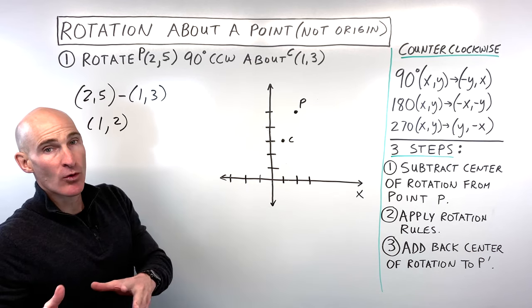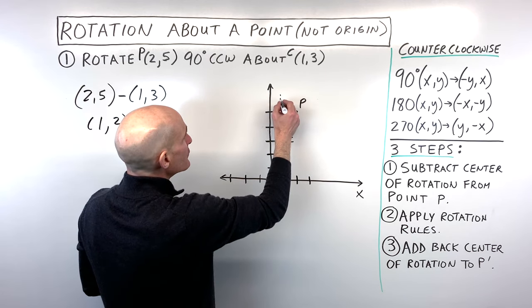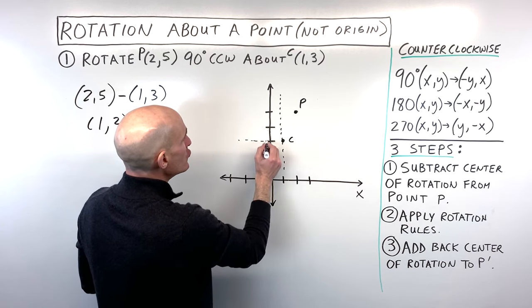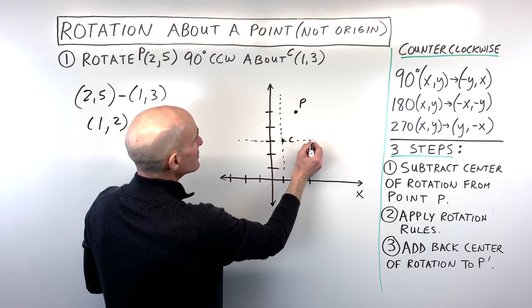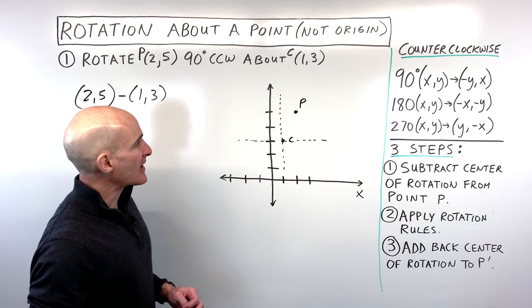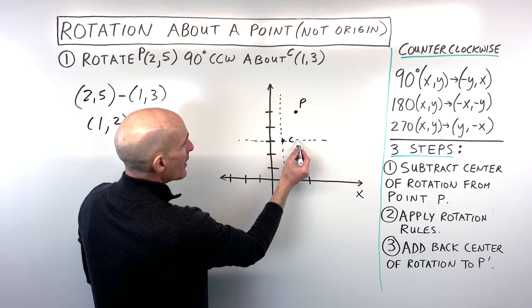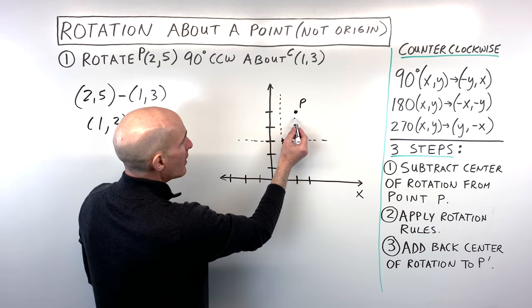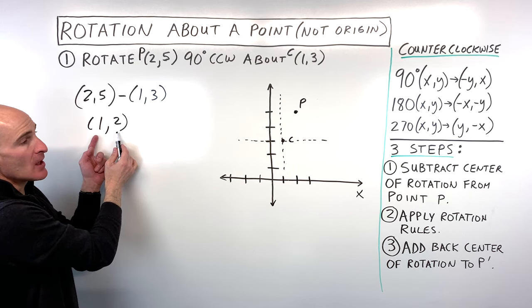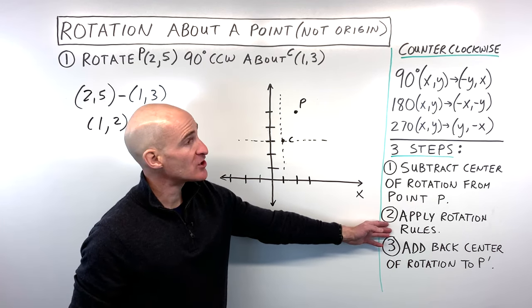You're probably wondering why we do that. Well, imagine the center of rotation as your new origin. I'm drawing in a dashed x and y axis there. You can see point P is really right 1, up 2 from that center — that's why we get (1, 2).